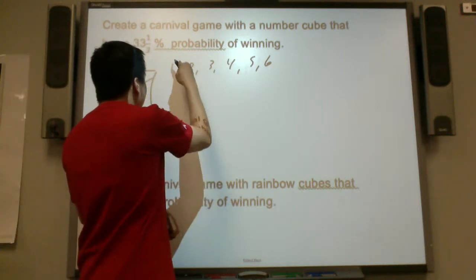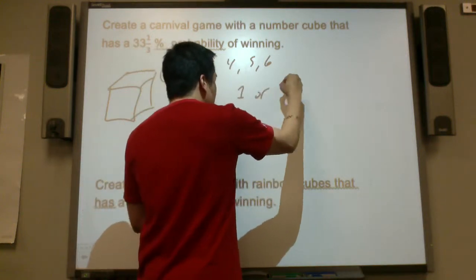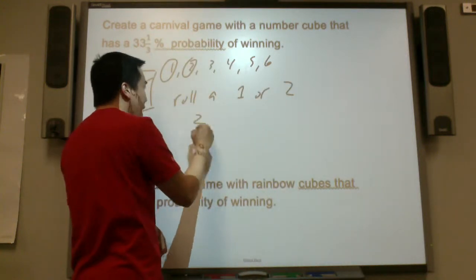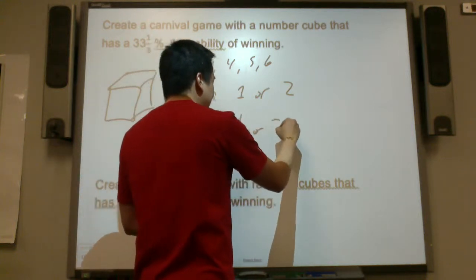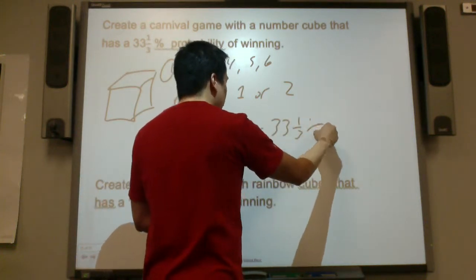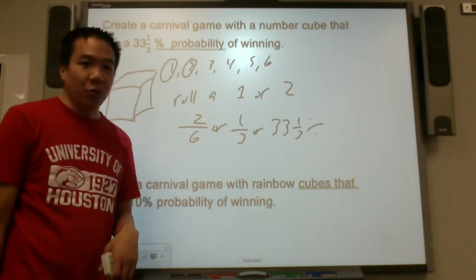What about if you roll a one or two? That's going to be two out of six, or one third, which is the same thing as saying 33 and one third percent. So what about rolling a one or a two to get 33 and one third percent?